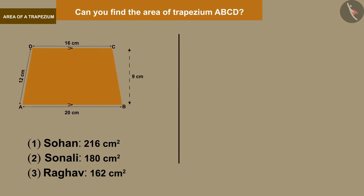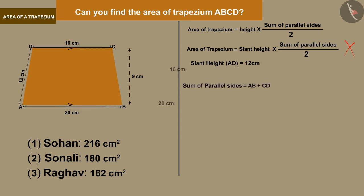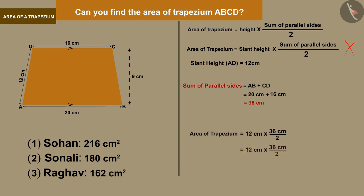Let's see how Sohan solved this problem. According to him, Sohan took the slant height instead of the perpendicular height in the formula for the area of a trapezium, which is wrong. In the trapezium shown, the slant height is 12 cm, and AB and CD are parallel sides whose sum is 36 cm. Substituting the slant height and the sum of the parallel sides, Sohan gets the area of the trapezium as 216 cm², which is the wrong answer.